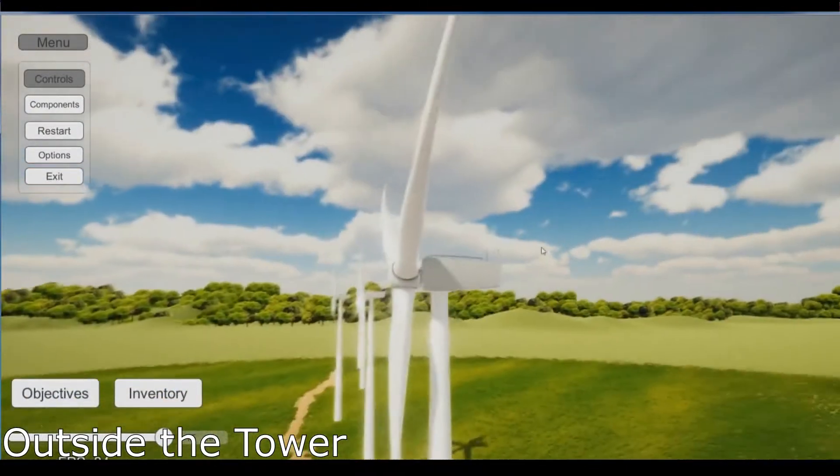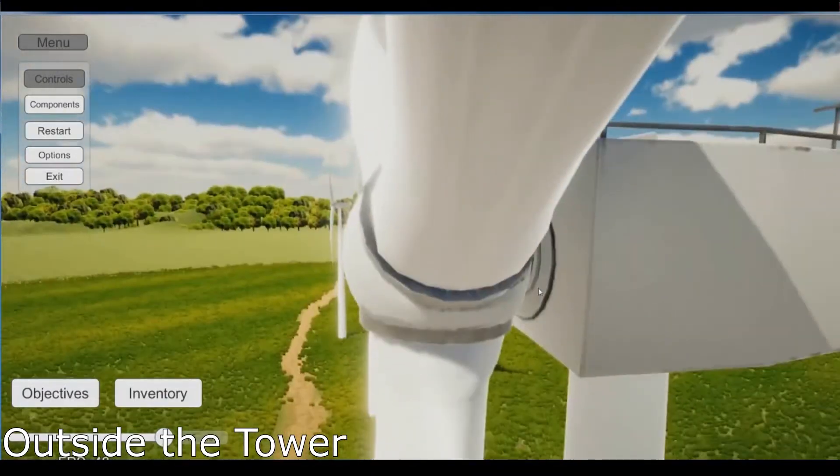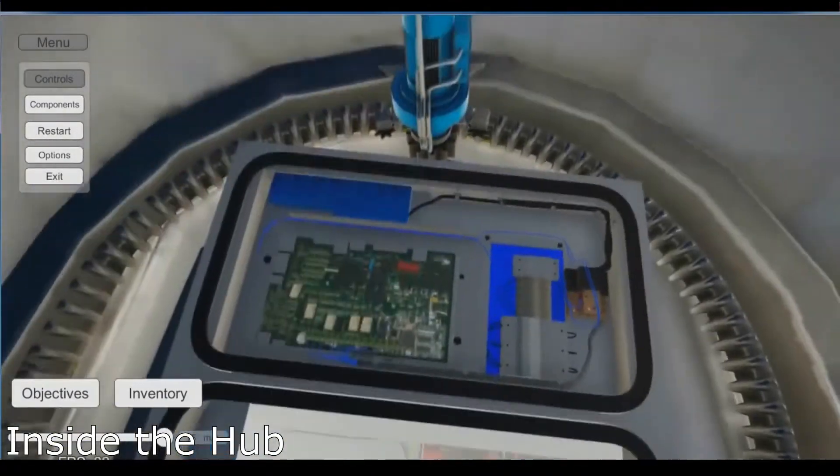Once on site, the user is able to travel to different parts of the turbine to start the troubleshooting process. Here we see the hub and the systems inside it.